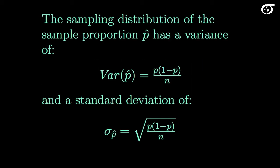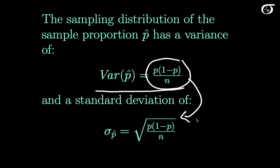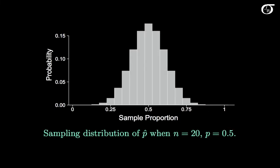The sampling distribution has a variance, and that variance can be worked out mathematically fairly easily. One thing to note is that it actually involves the true value of the parameter, which we don't know. The true value of p we do not know typically, so this is going to pose an issue and we'll have to deal with it in a couple of different ways. Taking the square root of the variance gives us the standard deviation, which is the square root of p times (1 minus p) over n.